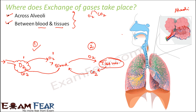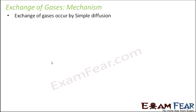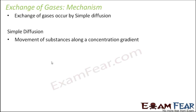Now we will look at the mechanism behind the exchange of gases — how does exchange take place? Why does oxygen move from alveoli to blood vessels and why does carbon dioxide move from blood vessels to alveoli? Similarly, why does oxygen move from blood vessels to tissues and why does carbon dioxide move from tissues to blood vessels? Exchange of gases occurs by simple diffusion. Diffusion is the process by which substances move along a concentration gradient — from a region of high concentration towards a region of low concentration.